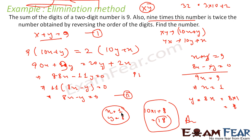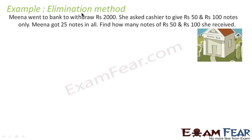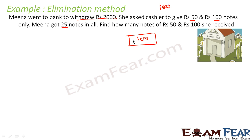Let us take one more example of the elimination method. Meena went to the bank to withdraw 2000 rupees. She asked the cashier for 500 and 100 rupee notes and Meena got 25 notes in total. Let the number of 500 rupee notes be x and the number of 100 rupee notes be y.